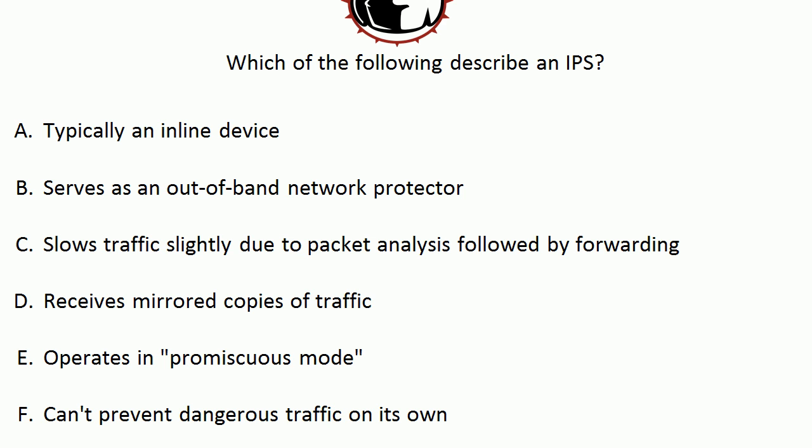Choice B — serves as an out-of-band network protector — describes an IDS, so B would not be correct for this question. Choice C — slows traffic slightly due to packet analysis followed by forwarding — actually does describe an IPS because the device is inline. So as the packets come in, the device is going to analyze them and then forward them if it's supposed to.